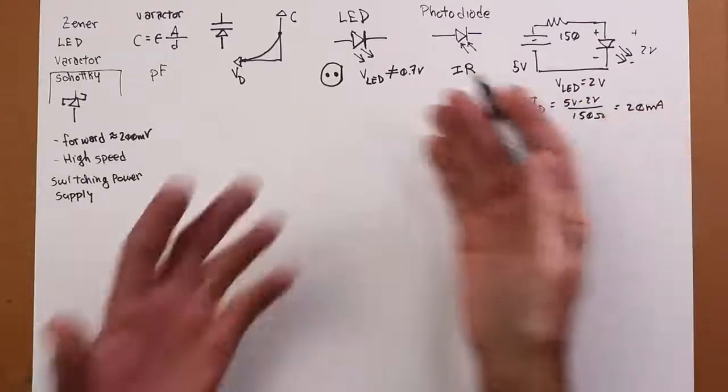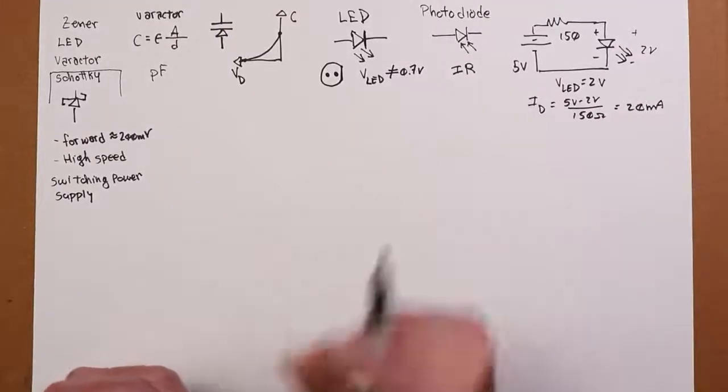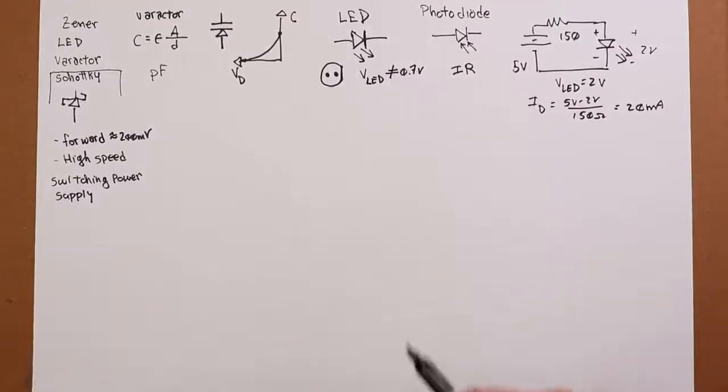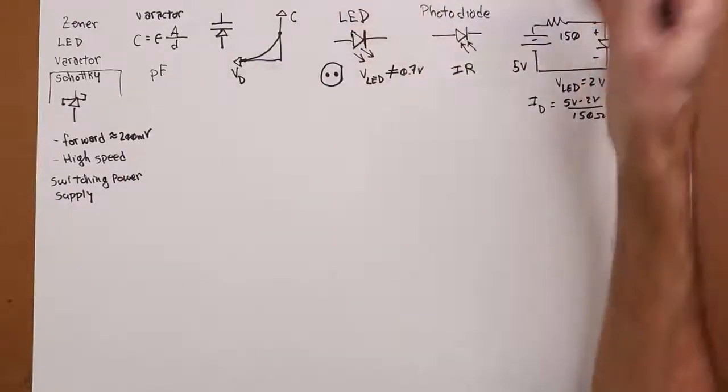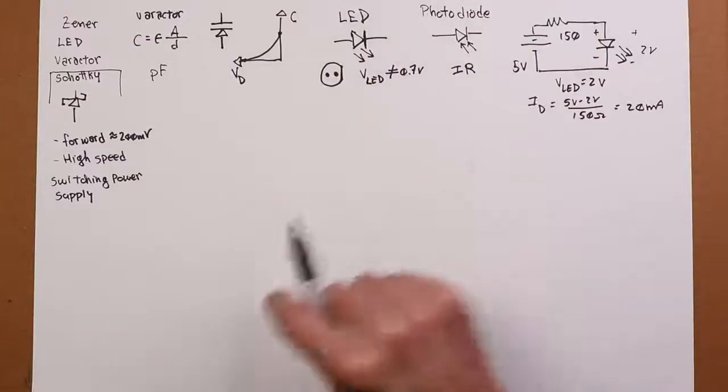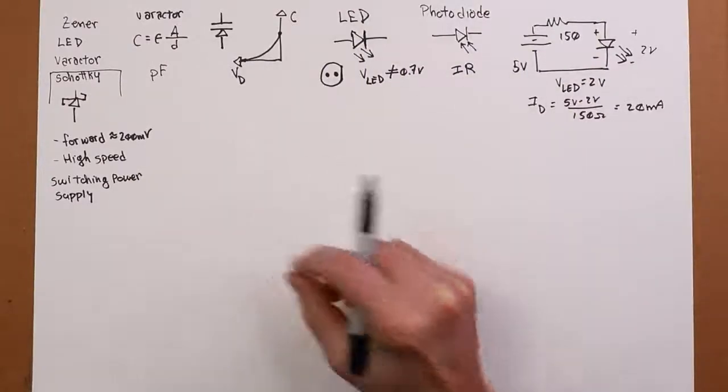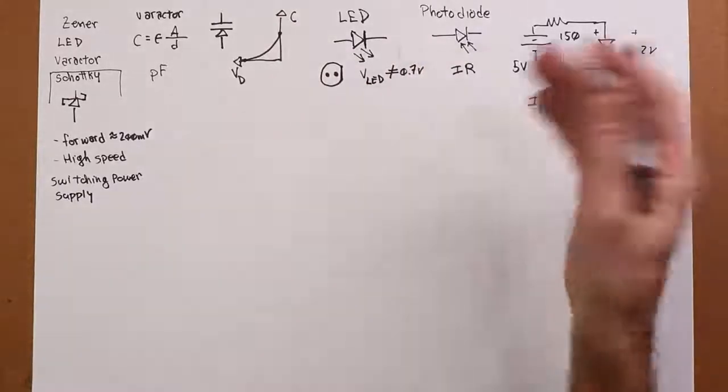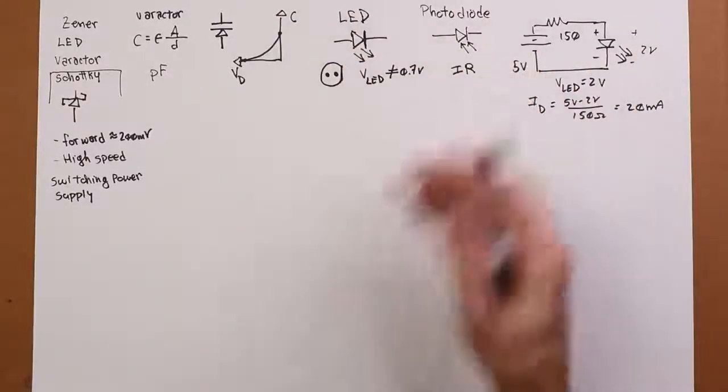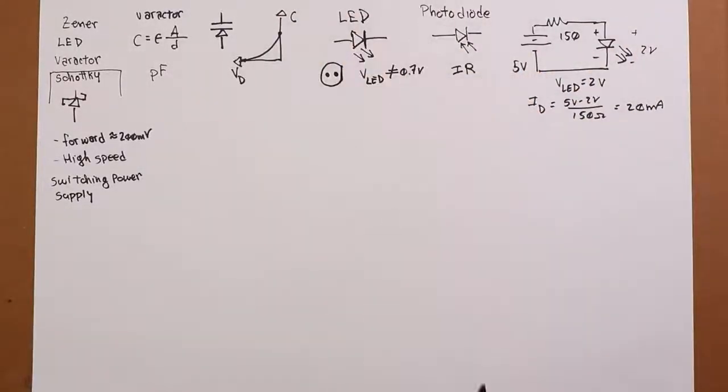So instead of the rectifying diode getting warm, most of that energy turns into, instead of infrared heat energy, it turns into visible light. So basically as the electrons are moving an energy level, they're emitting photons at red or yellow or whatever the wavelength is that that LED was designed for.